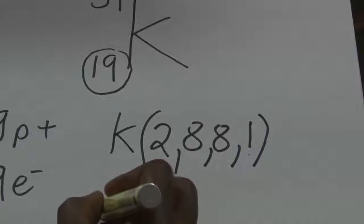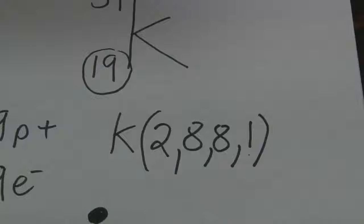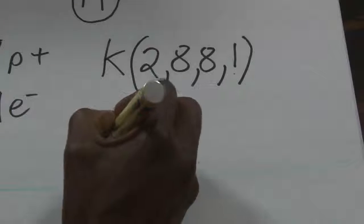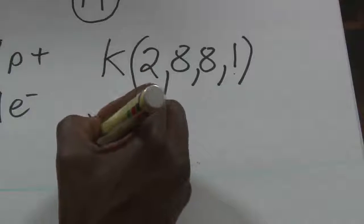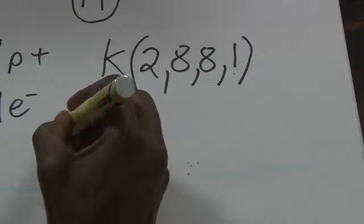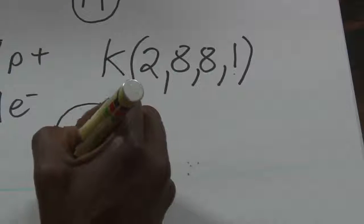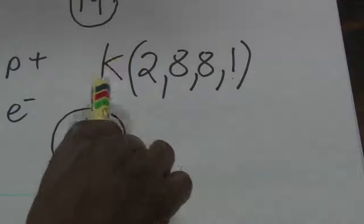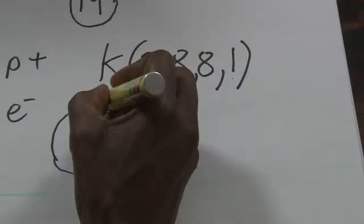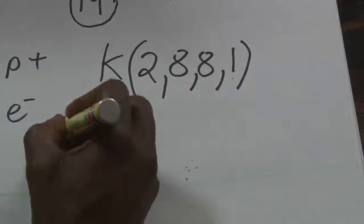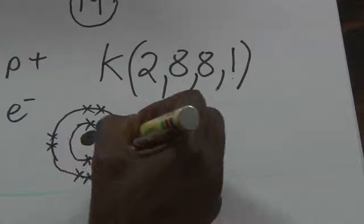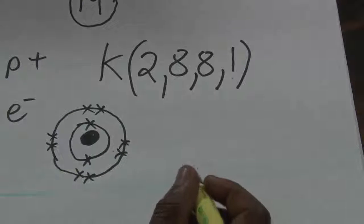So what do we do? We draw our atom. We start off with a nucleus, then we draw our first shell and put in two electrons. We draw our second shell — it's very easy to do this once you have the electronic configuration. This shell has two electrons here, two here, two here, two there — so that's eight altogether.